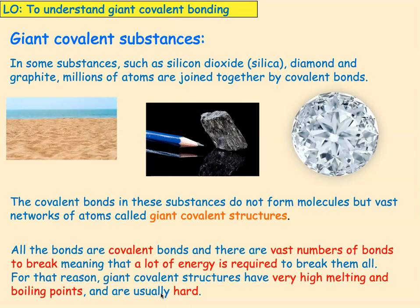All the bonds are covalent bonds, and there are a vast number of bonds to break, meaning — just like with the metals and with the ionic lattice — you're going to need a lot of energy to break them all. Giant covalent structures have very high melting and boiling points and are very hard, just like ionic substances were hard and metals are hard.